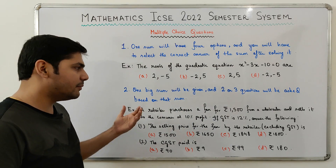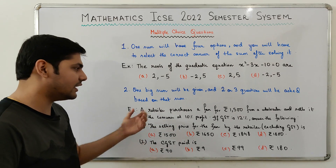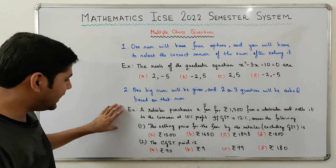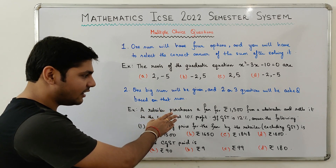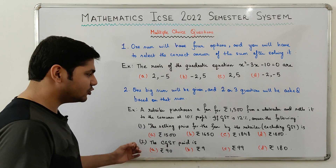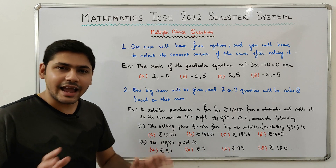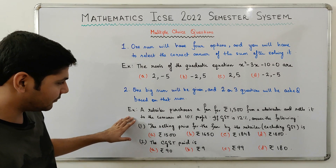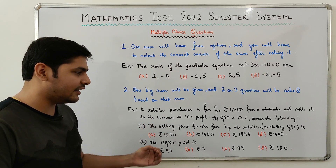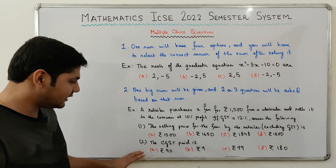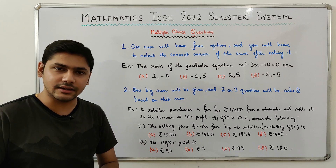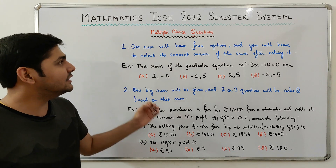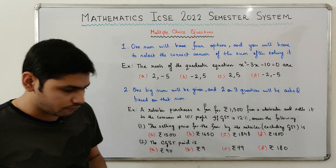Type 2: one big sum will be given and two or three questions will be asked based on it. For example, from GST: 'A retailer purchases a fan for ₹1500 from a wholesaler and sells it to the consumer at 10% profit. If GST is 12%, answer the following.' Two or three questions follow, such as 'What is the selling price excluding GST?' and 'What is the CGST paid?' — each with four options. So based on one big sum, two or three different questions can be asked.